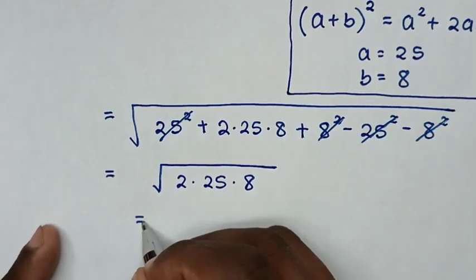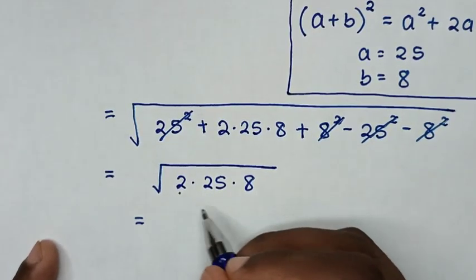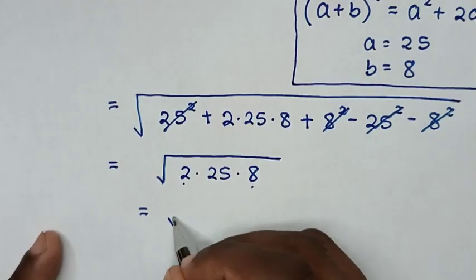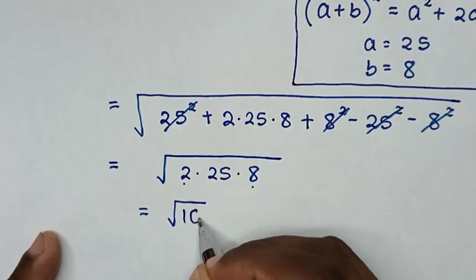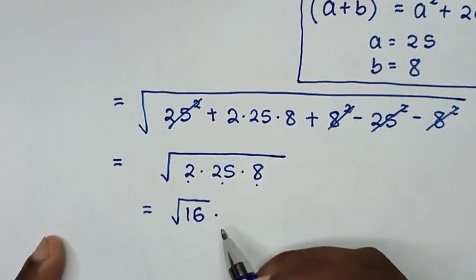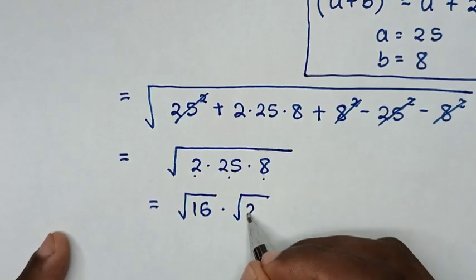Then, it will be equal to square root of 2 times 8 is square root of 16, then times this square root of 25.